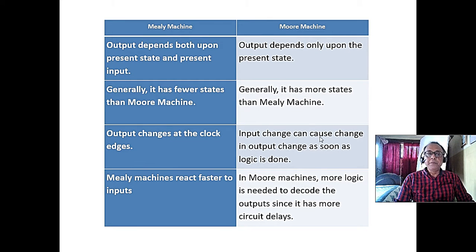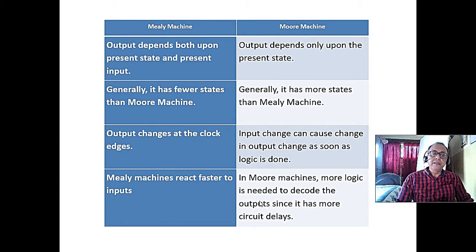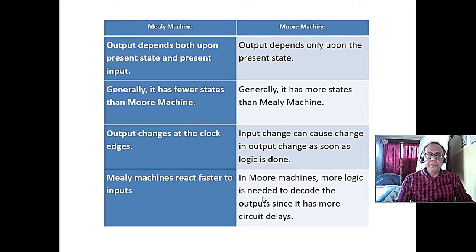Input change causes change on the output as soon as logic is done. It takes time, it is slower, a bit slower. Mealy machine reacts faster, that's true. And Moore machine, more logic is needed to decode the output since it has more circuit delays. It is bit slower, but it is stable.